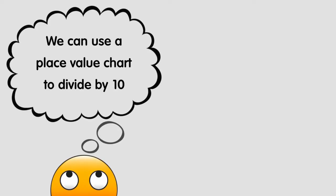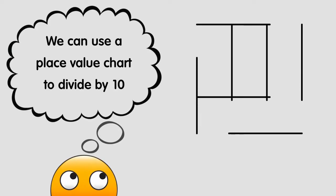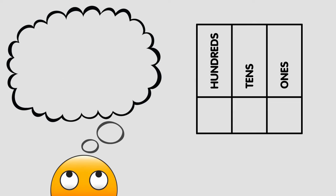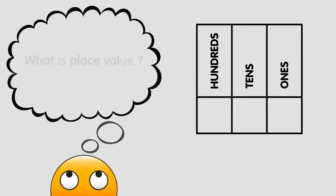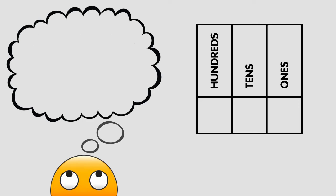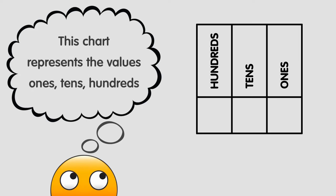We can also use a place value chart to easily divide a number by 10. Place value tells us how much each digit in a number represents. This chart represents the values ones, tens, and hundreds.